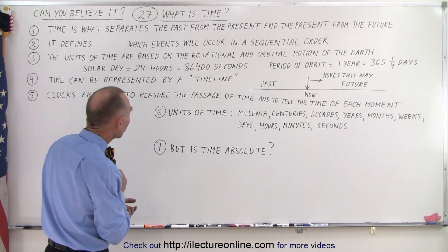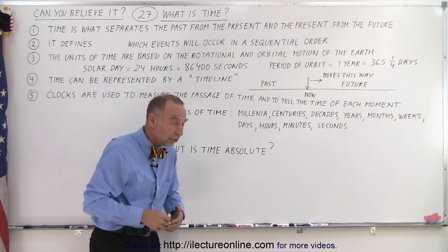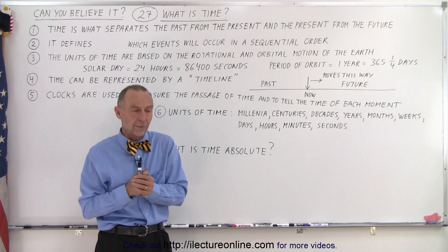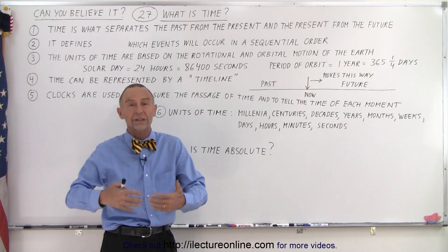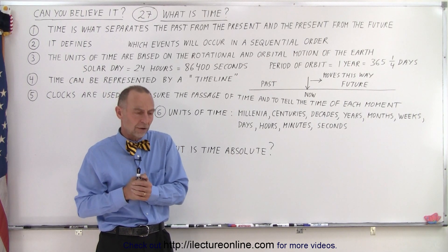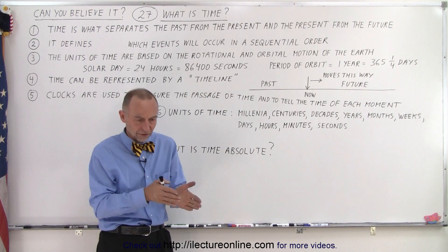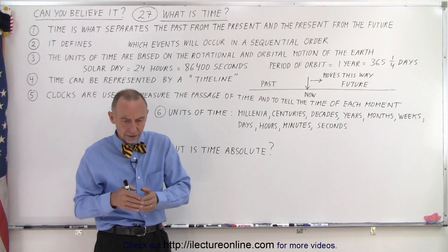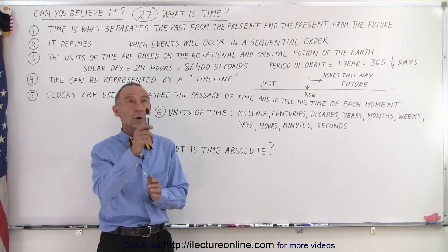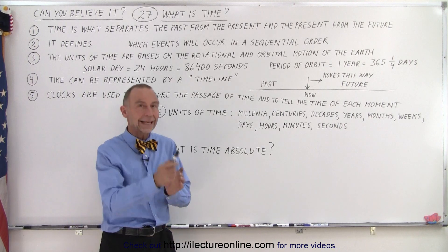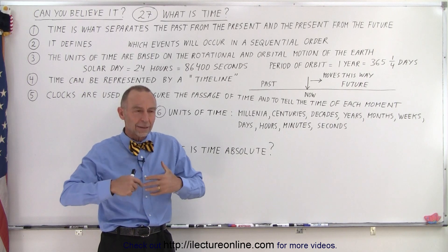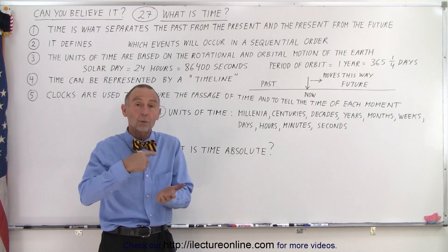The units of time are based on the rotational and orbital motion of the Earth. Because we live on the Earth and the Earth rotates in just slightly under 24 hours, but a solar day is defined as a 24-hour day. 24 hours also equate to 86,400 seconds.